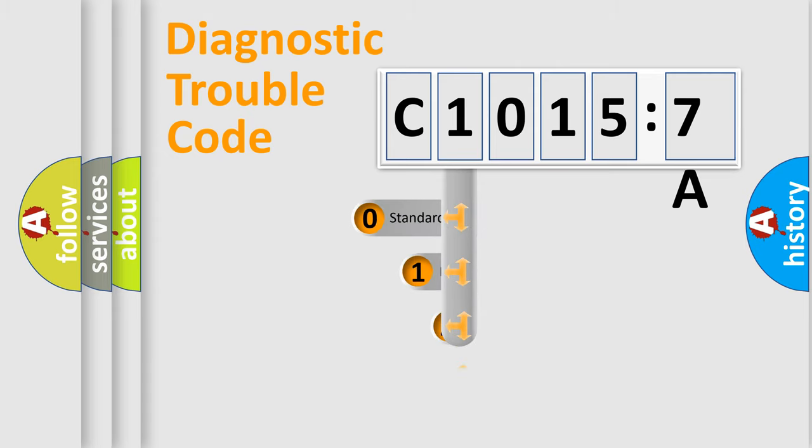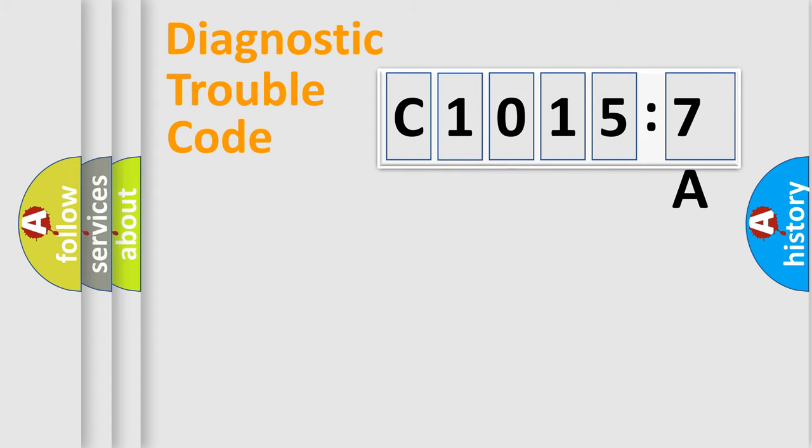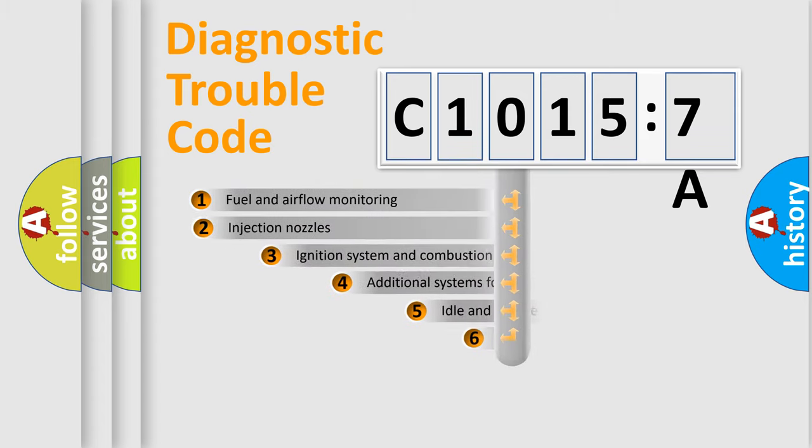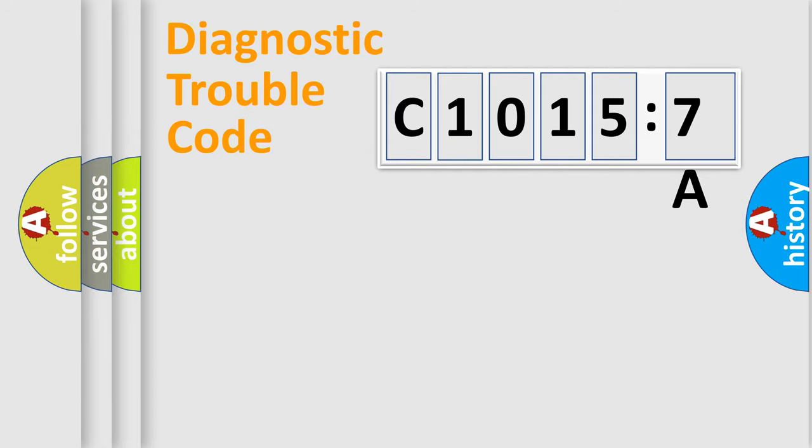This distribution is defined in the first character code. If the second character is expressed as zero, it is a standardized error. In the case of numbers 1, 2, or 3, it is a manufacturer-specific error. The third character specifies a subset of errors. The distribution shown is valid only for the standardized DTC code. Only the last two characters define the specific fault of the group.